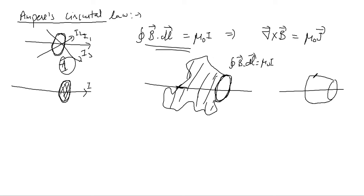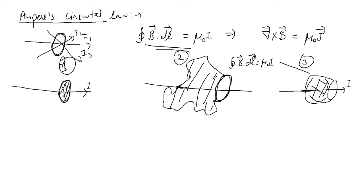In the third case I can draw a surface that looks something like this. For this surface also the condition is satisfied because the current i is piercing the surface at this point. Now we are fine with this scenario, but let's consider what would happen if you have a capacitor somewhere.